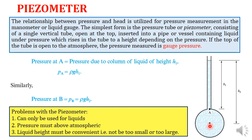Third, the liquid height must be convenient — not too small or too large. If the pressure difference between the liquid and atmosphere is too large, the column height may exceed the designed length of the tube and overflow. We must keep the head within the designed limit of the tube length. Due to these limitations, we must study more complex and specified types of devices.